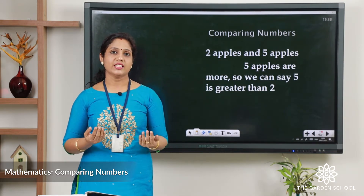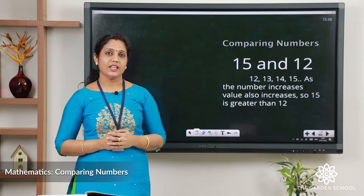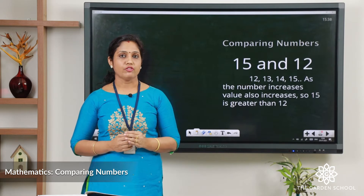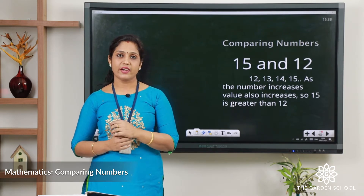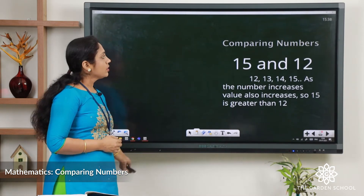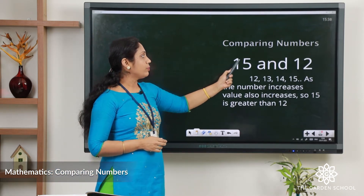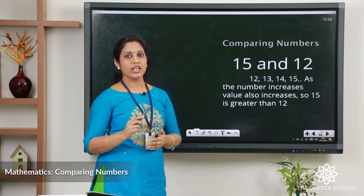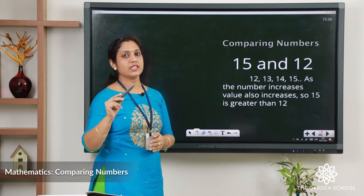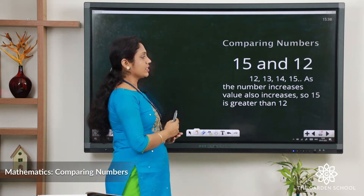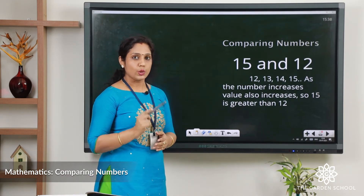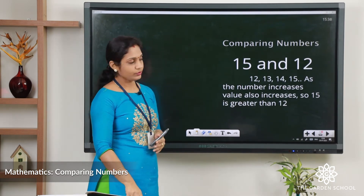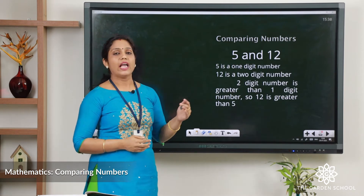So we can say five is greater than two. Let's take another example: here we have 15 and 12. We have to find out which number is greater. Let's count from 12: 12, 13, 14, 15. As the number increases, the value also increases, so we can say 15 is greater than 12.